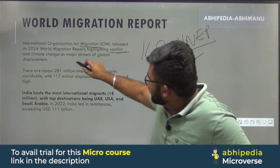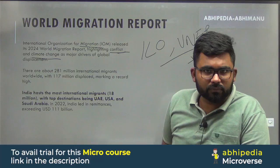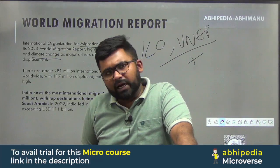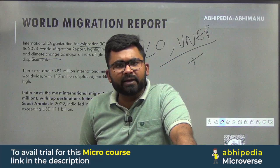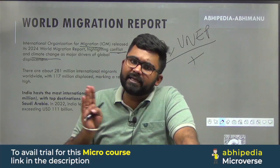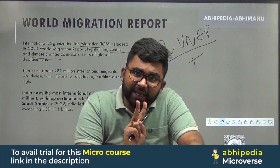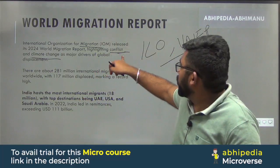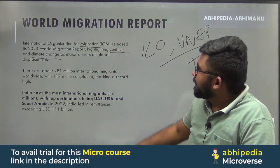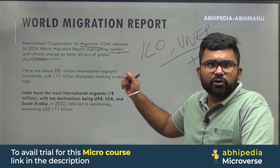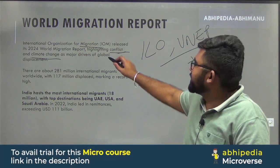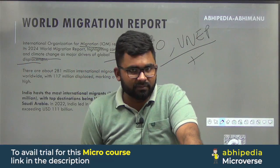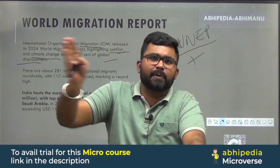The major drivers globally for migration are conflict and climate change. These are highlighted in the World Migration Report as the two primary causes of global displacement.